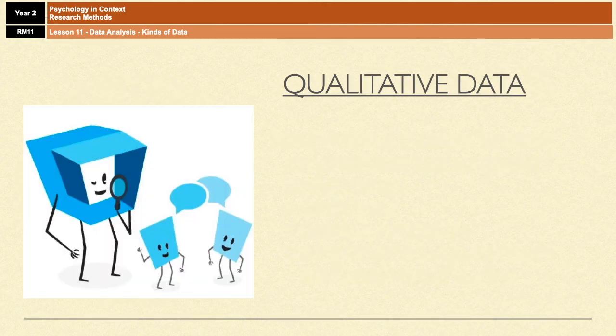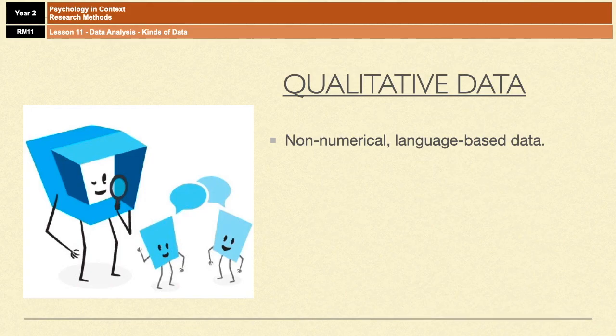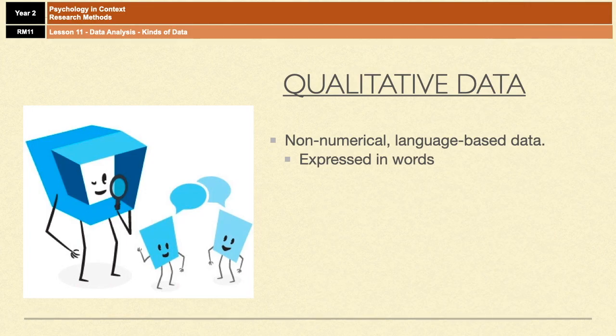Whereas qualitative data, on the other hand, is non-numerical data, is language-based data or descriptive data. So it's collected through semi-structured interviews or unstructured interviews or open questions in questionnaires.